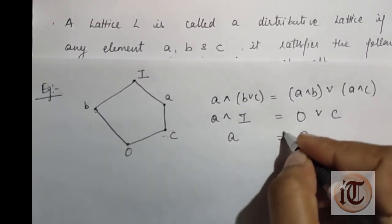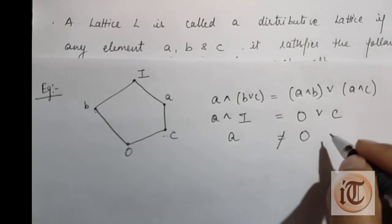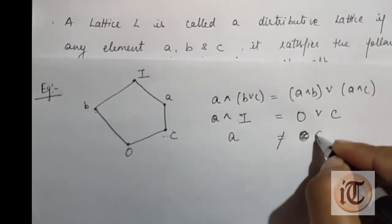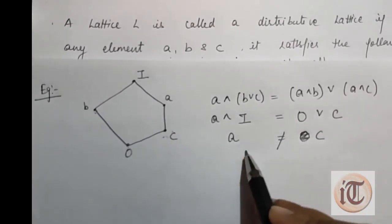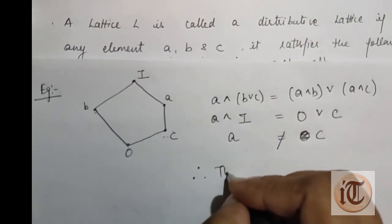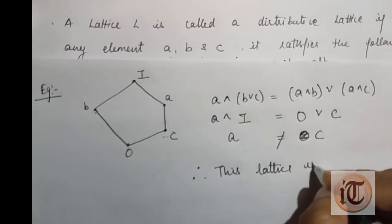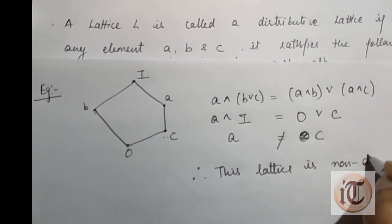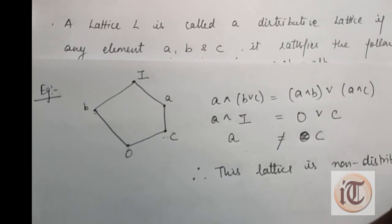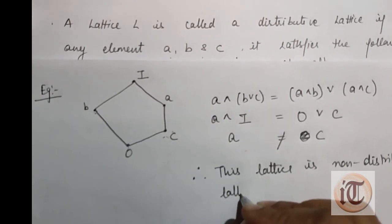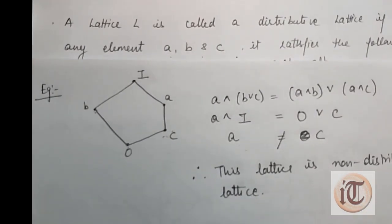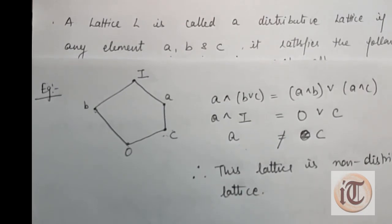So the left-hand side A is not equal to the right-hand side C, therefore this lattice is again a non-distributive lattice. This is how we determine whether a lattice is a distributive lattice or not. In my next video I am going to discuss the complement lattice. Keep watching. Thank you so much.